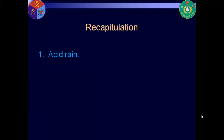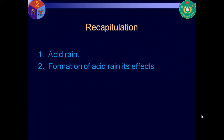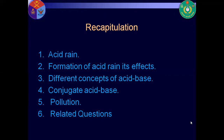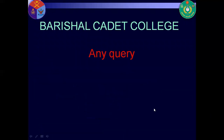Today's discussion covered: acid rain, formation of acid rain and its effects, different concepts of acid-base, conjugate acid-base, and different types of related questions — knowledge-based, understanding-based, application, synthesis, and evaluation. We discussed the harmful effects of acid rain, source of water, and the importance of water. If you have any questions, I will solve your problems.